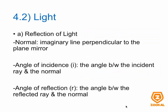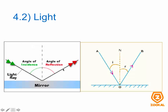Reflection of light. Some terms you might need to know in this chapter. The normal is an imaginary line perpendicular to the mirror plane. The angle of incidence is the angle between the incident ray and the normal. The angle of reflection is the angle between the reflected ray and the normal.